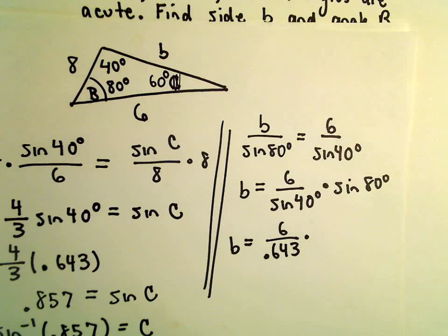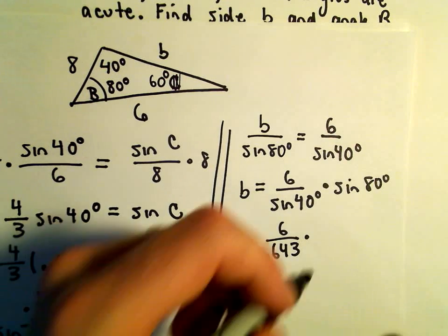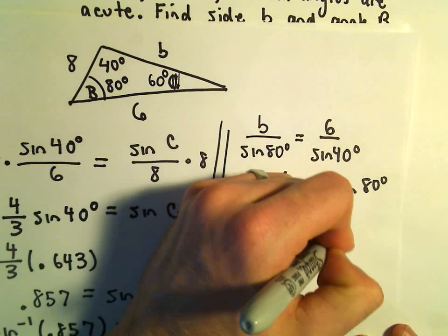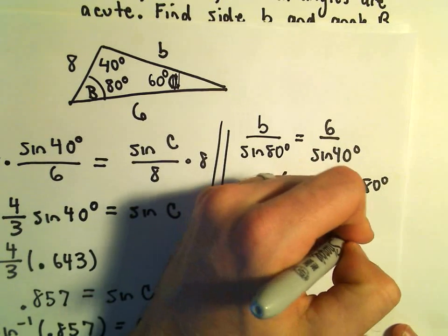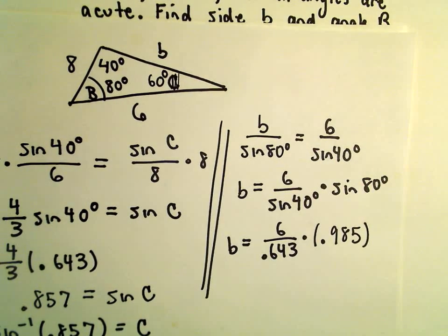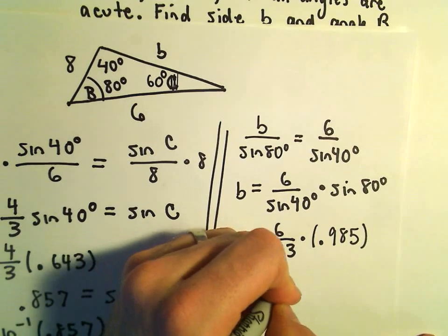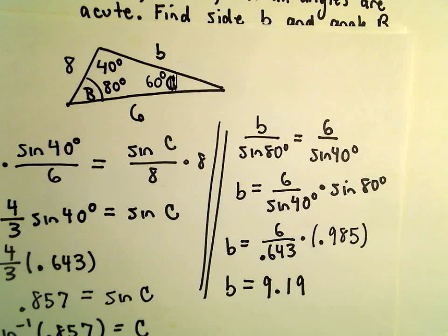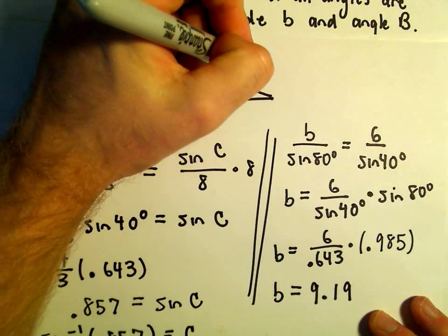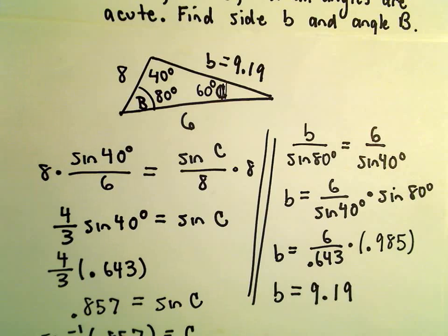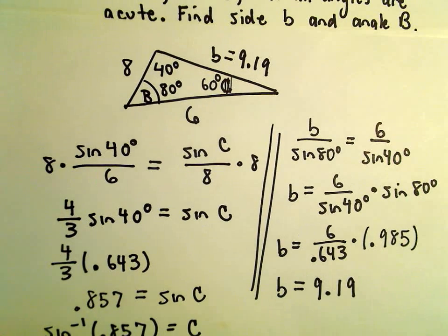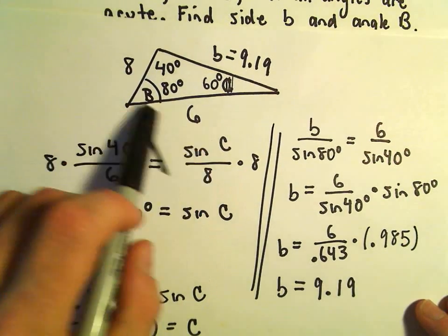Sine of 80 degrees — I'm getting that to be approximately 0.985. So I'm going to take 0.985, multiply that by 6, and divide that by 0.643. I'm getting our side length b to be 9.19 after rounding. So now we know all the angles and all the lengths. All you're really doing is just repeatedly using the law of sines to figure out the values that you're missing.